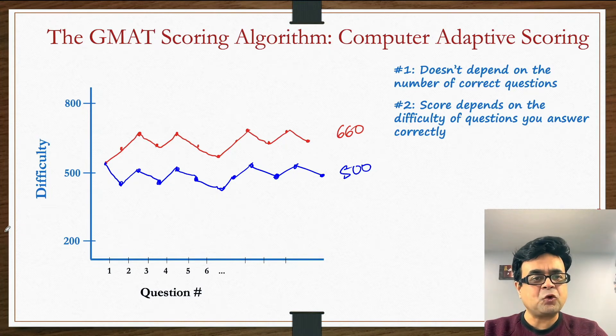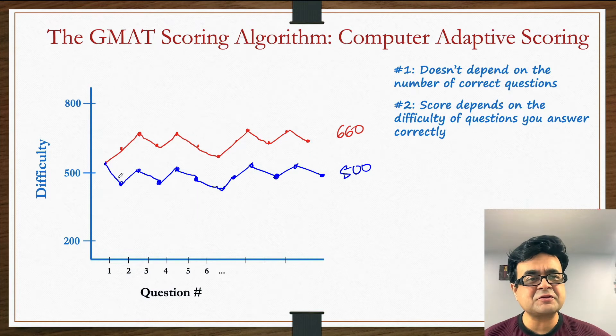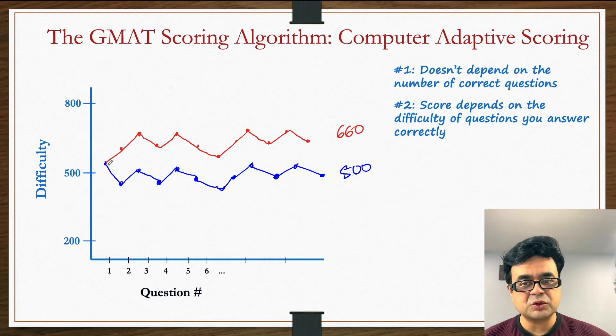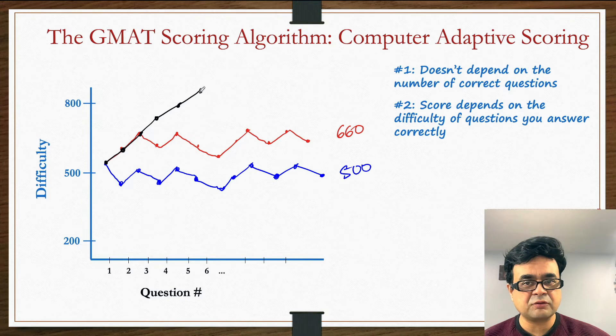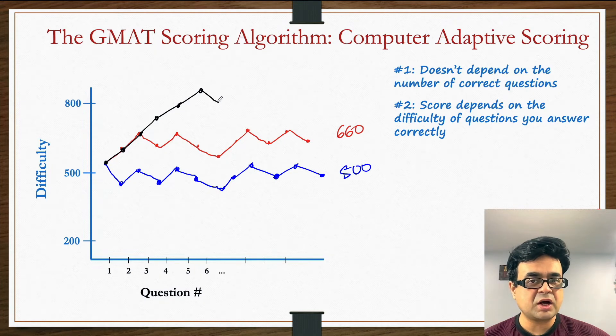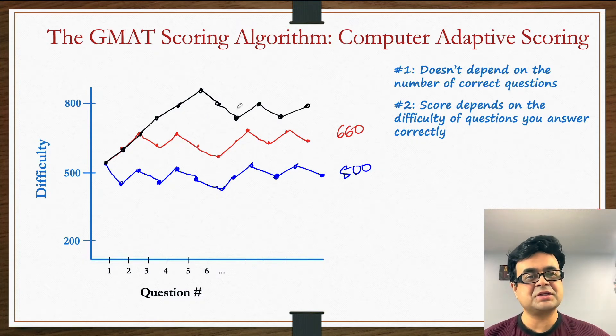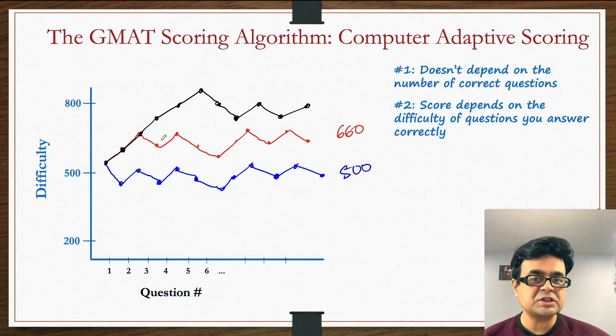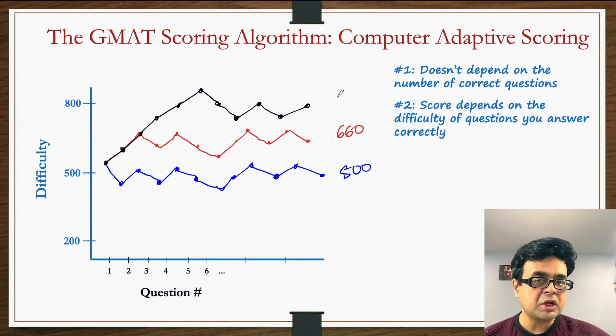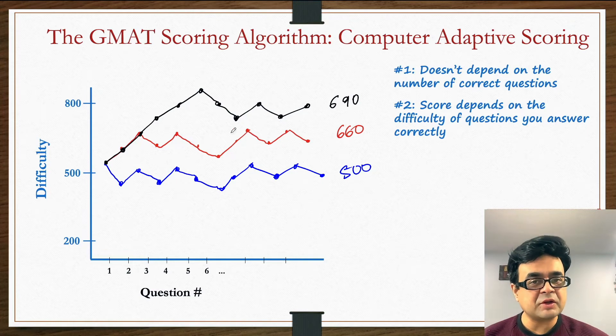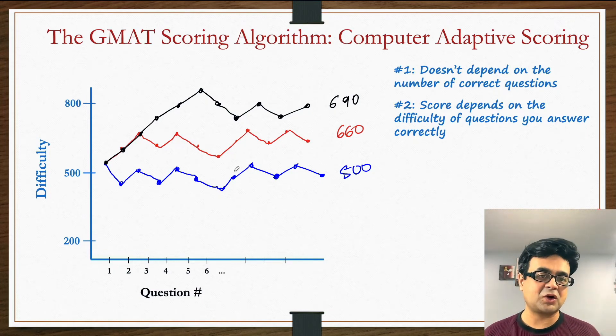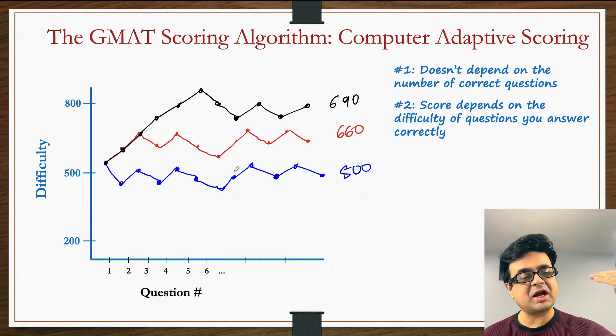Let's take a scenario where you get the first five questions correct. You start here, get your first, second, third, fourth, and fifth questions right. Then after this, you follow a different pattern. Even though you answered the exact same number of questions correctly, because you reached a very high level in your first five questions, you scored somewhere higher. Getting the first 10 questions right can take you really high, and if you get that high level of difficulty questions right, your score average will automatically pull up.